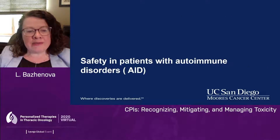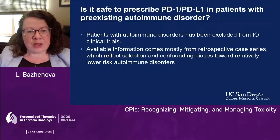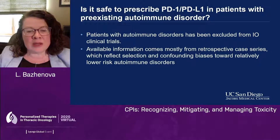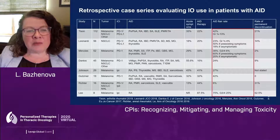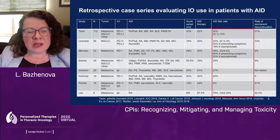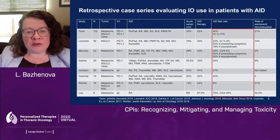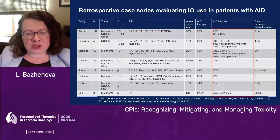What do we know about giving immunotherapy to patients with autoimmune disorders? Not much, because patients with autoimmune disorders have been excluded from immunotherapy trials. All available information comes mostly from retrospective case series, subject to publication bias. Patient numbers are relatively small, ranging from 8 to about 112 patients. The risk of exacerbation of an autoimmune condition on immunotherapy ranges from about 24% to about 40%. Also, if your patient has preexisting active symptoms, there is a higher likelihood of developing immune-related adverse events on therapy.